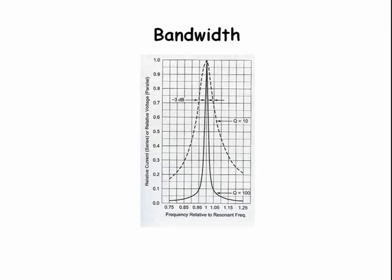3 dB down is where the circuit power is half the peak power. So these two points are called the half power points. The higher the Q, the narrower the frequency response.